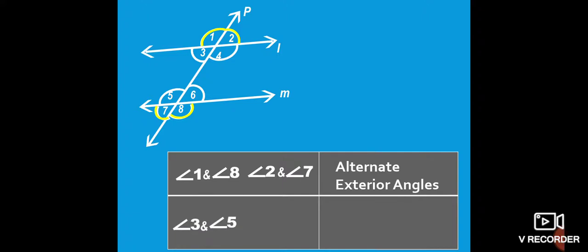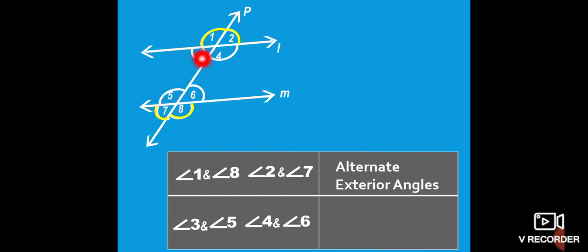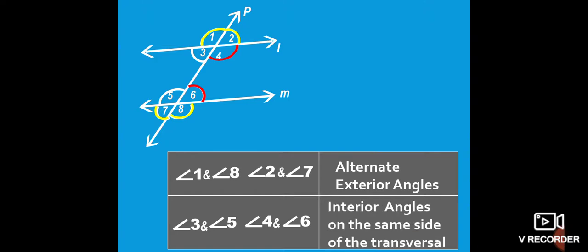Next, angle 3 and angle 5, and angle 4 and angle 6 — two pairs. Angles 3 and 5 are on the same side of the transversal. They are interior angles on the same side of the transversal. That is the name: interior angles on the same side of the transversal. These are the names of the different angles — all 8 angles have special names.